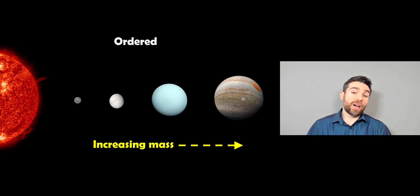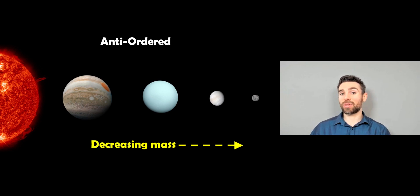And then the opposite of that is anti-ordered, so that would be flipped around. You'd actually have your larger planets close to the star, and then you would get a decrease in mass as you got further away from the star. So that would be anti-ordered, which is the opposite way around to the ordered one.